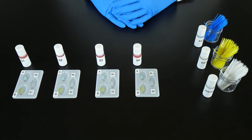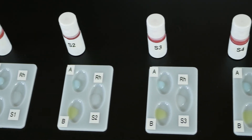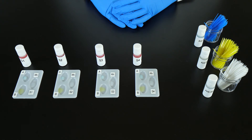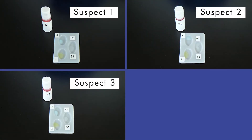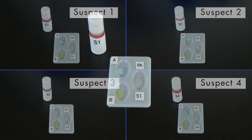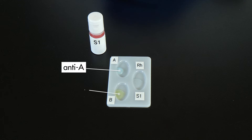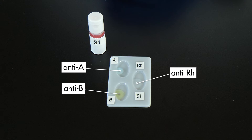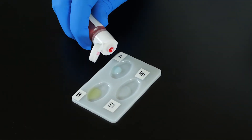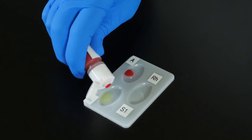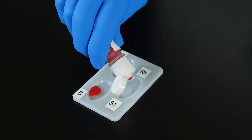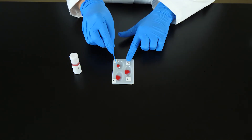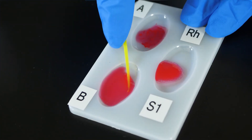Now that we have a better understanding of blood types, it is time to test the blood samples of our suspects. We use special slides with wells to contain the drops of blood and serum. We have a separate slide for each suspect and have labeled the slides S1, S2, S3, and S4. On each slide, we have also labeled the wells A, B, and Rh for the serums we will use to type the blood. A few drops of each serum have been placed in each of the respective wells. Next, we carefully place a drop of blood from the suspect 1 bottle into each well on the slide labeled S1. To prevent contaminating our samples, we use a different stick to mix the contents of each well.